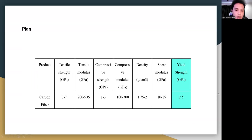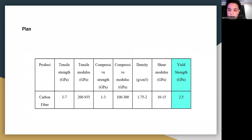The material selected is carbon fiber. Its tensile strength is 3–7 GPa, tensile modulus is 200–935 GPa, compressive strength is 1–3 GPa, compressive modulus is 100–300 GPa, density is 1.7–2 g/cm³, and shear modulus is 10–15 GPa. The yield strength is 2.5 GPa, which is the most important property as it determines whether the material will yield or fracture.